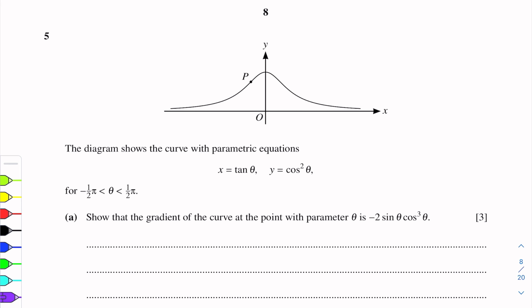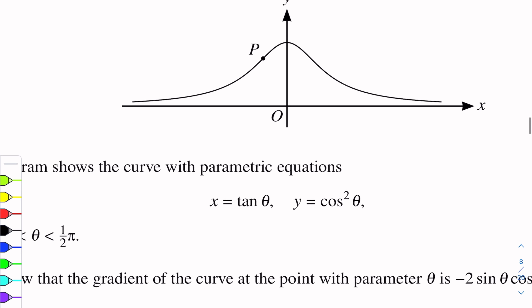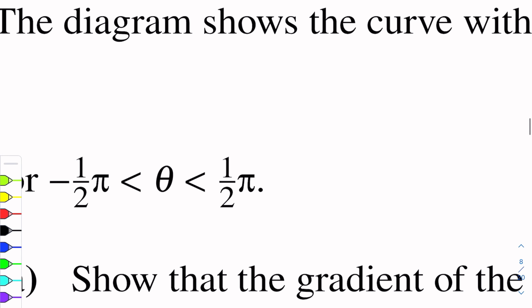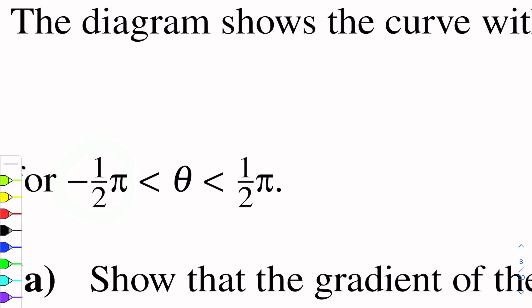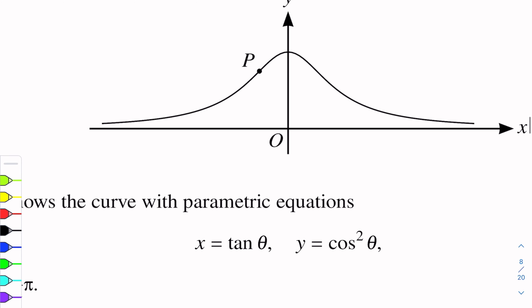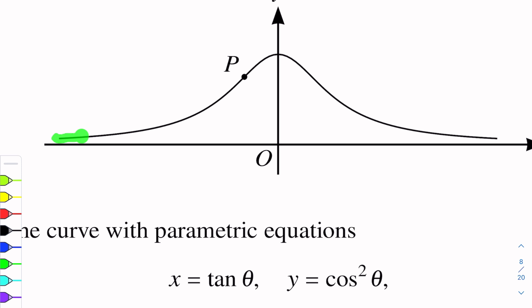Question number 5 is on differentiation. The diagram shows a curve with parametric equations: x is equal to tan theta and y is equal to cos squared theta, where theta lies between negative pi by 2 and positive pi by 2. This is the curve. These are the parametric equations: x equals tan theta, y equals cos squared theta.